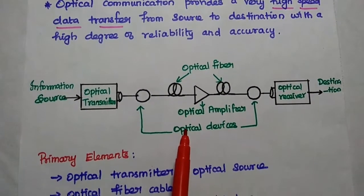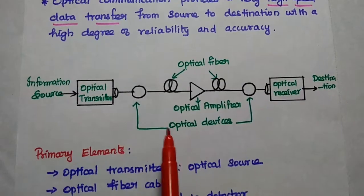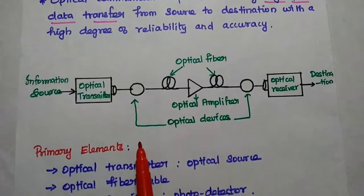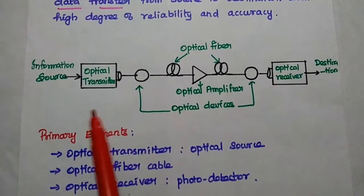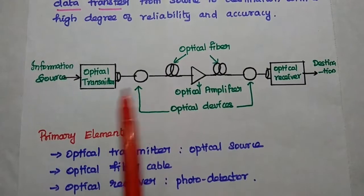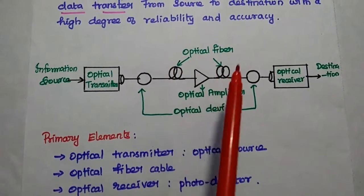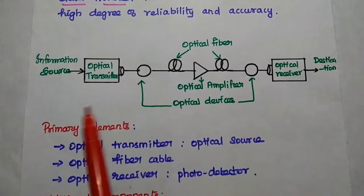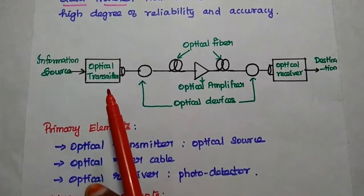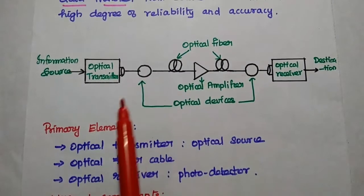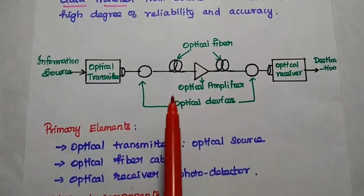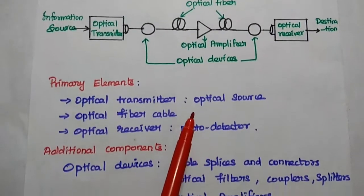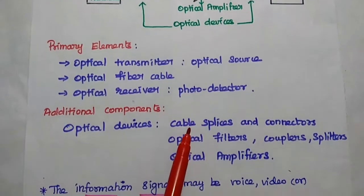In any communication system, three parts are very important: transmitter, communication medium, and receiver. This is the overview of optical communication system: information source, optical transmitter, the amplifier, optical fiber as a medium, optical receiver, and destination. The primary elements are transmitter, medium, and receiver. The secondary or additional elements are the optical active or passive devices and optical amplifier. Let's discuss each component in detail in this lecture video.